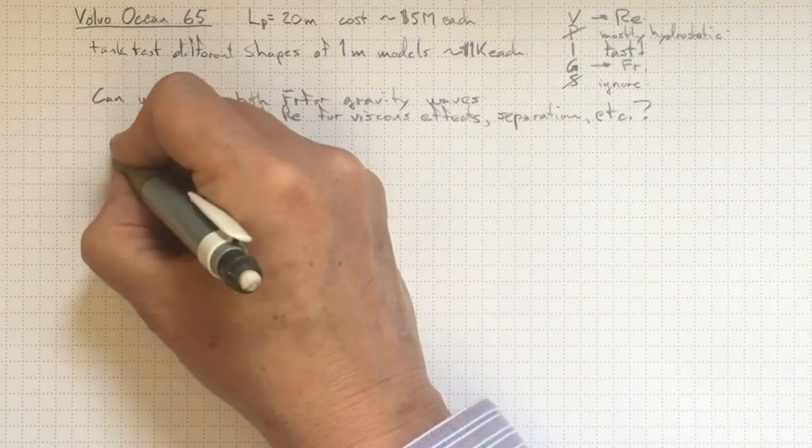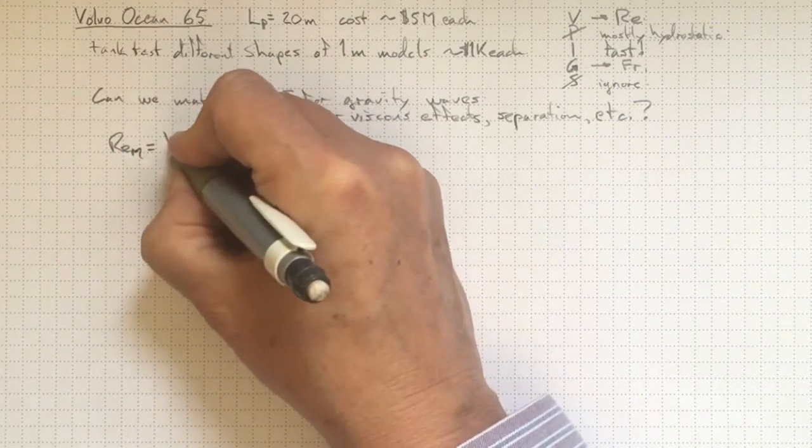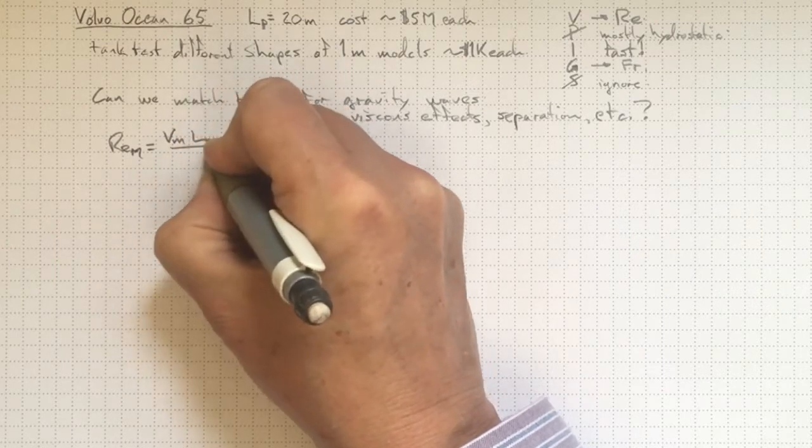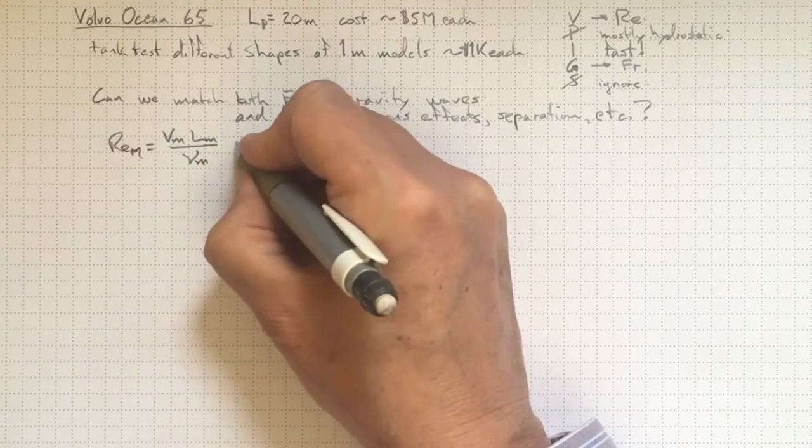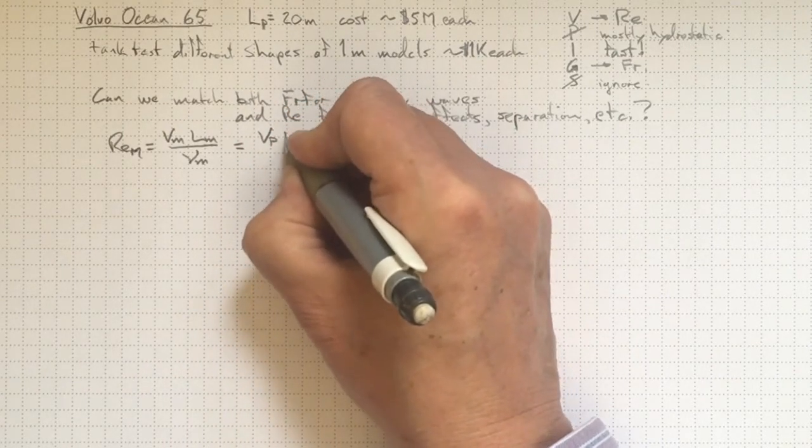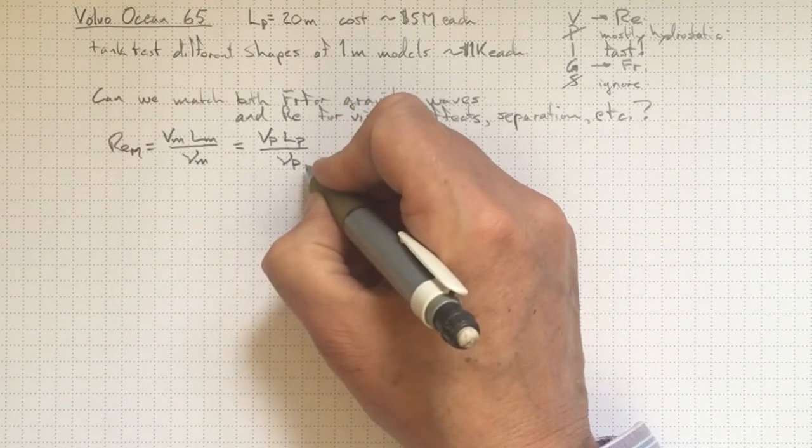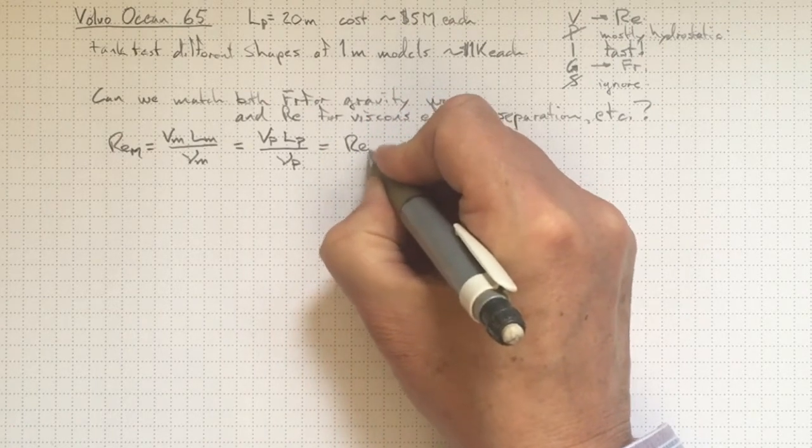If we look at the Reynolds number of our model, it's going to be equal to the velocity that the model's traveling at times the length of the model divided by the kinematic viscosity for the model. And that's going to have to be equal to the same quantities for the prototype. The velocity of the prototype's traveling at, the length of the prototype, and the viscosity in the prototype system. And that'll be equal to the Reynolds number of the prototype.